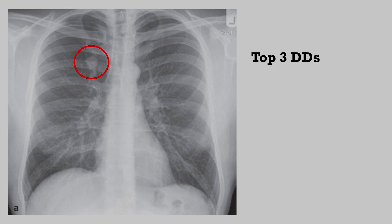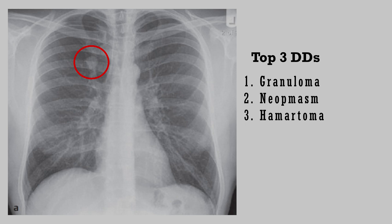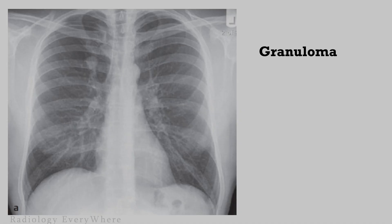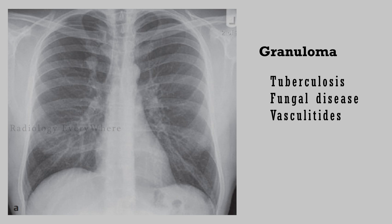The top three differential diagnoses are granuloma, neoplasm, and hamartoma. Additionally, I would like to add round pneumonia and AV malformation. Number one — granuloma: granulomas are usually produced secondary to an infectious or inflammatory process such as TB,